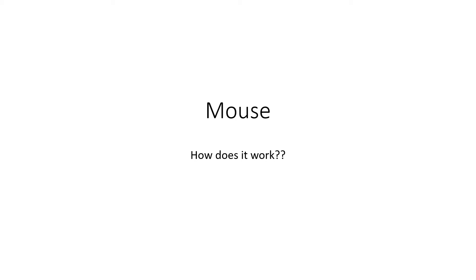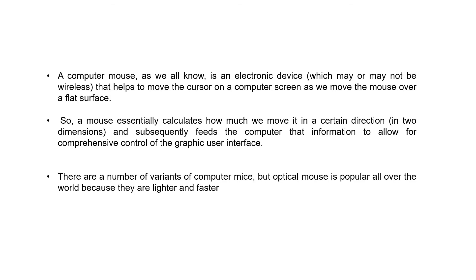Mouse, how does it work? A computer mouse is an electronic device that helps to move the cursor on a computer screen as we move the mouse over a flat surface.